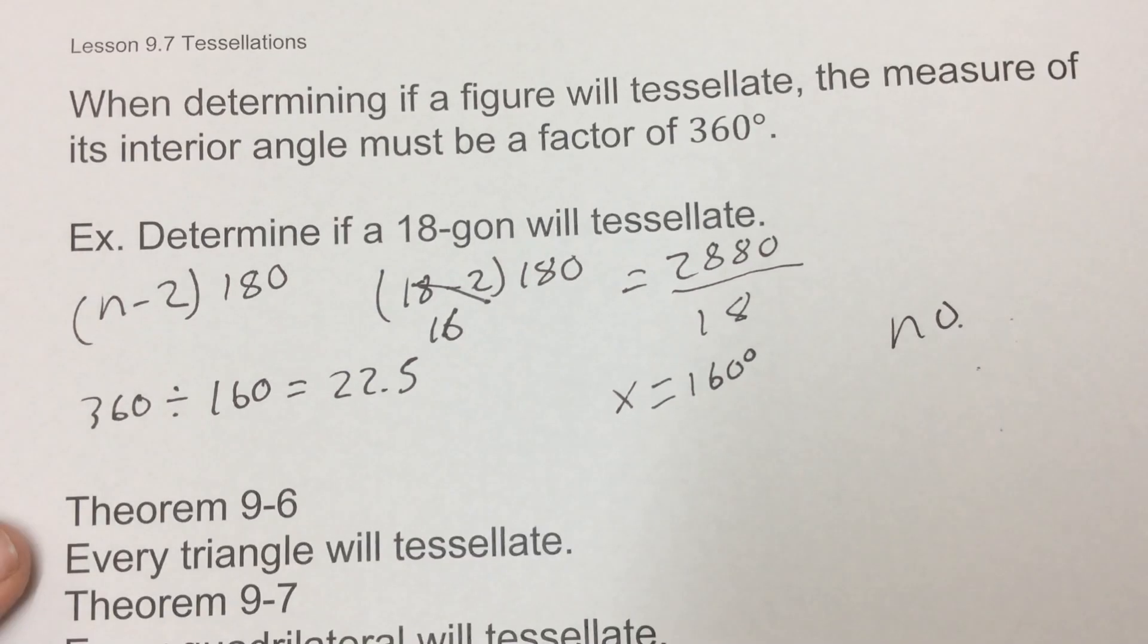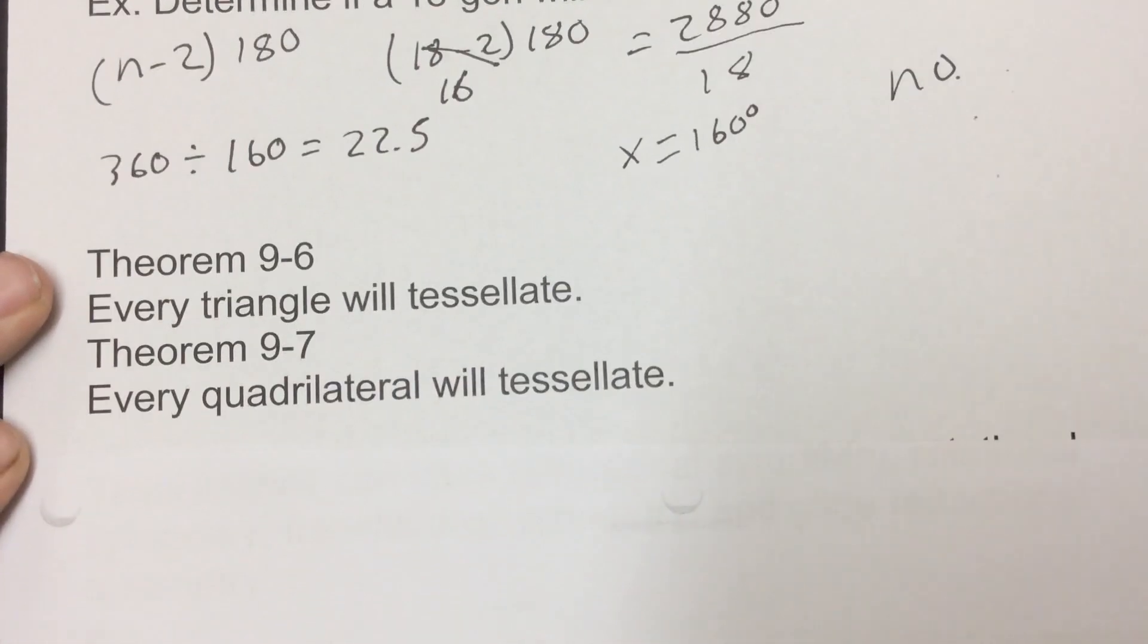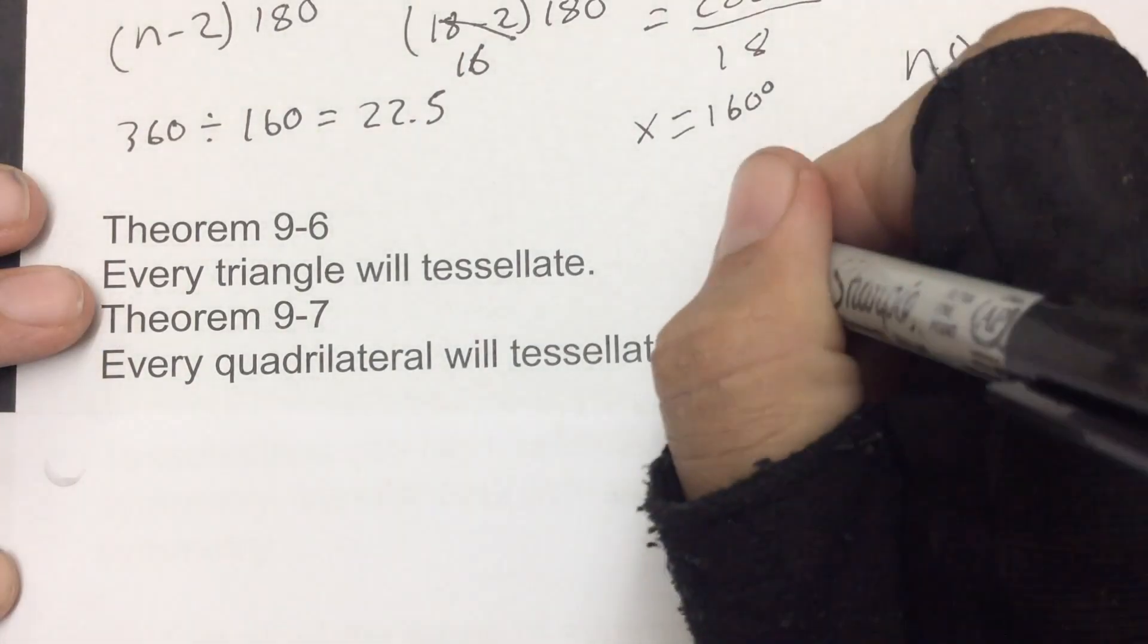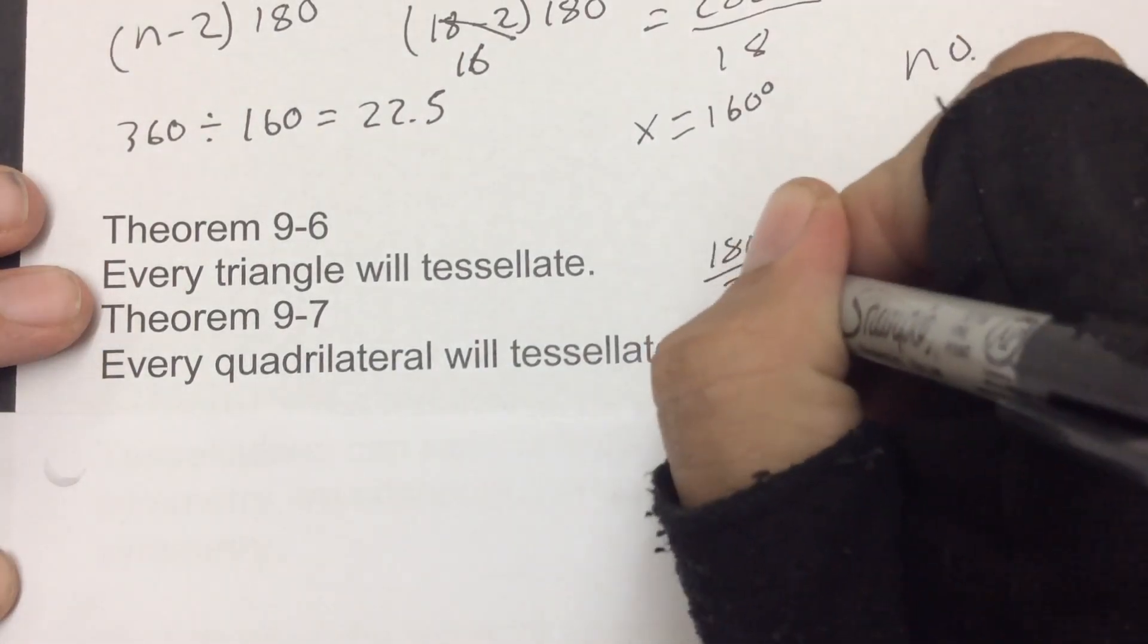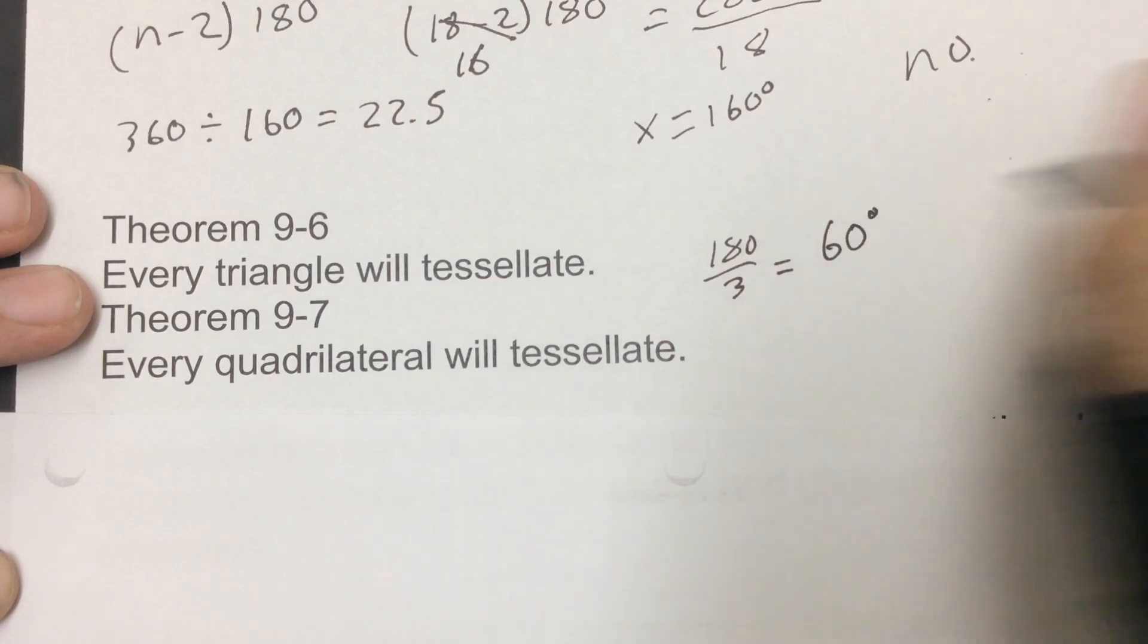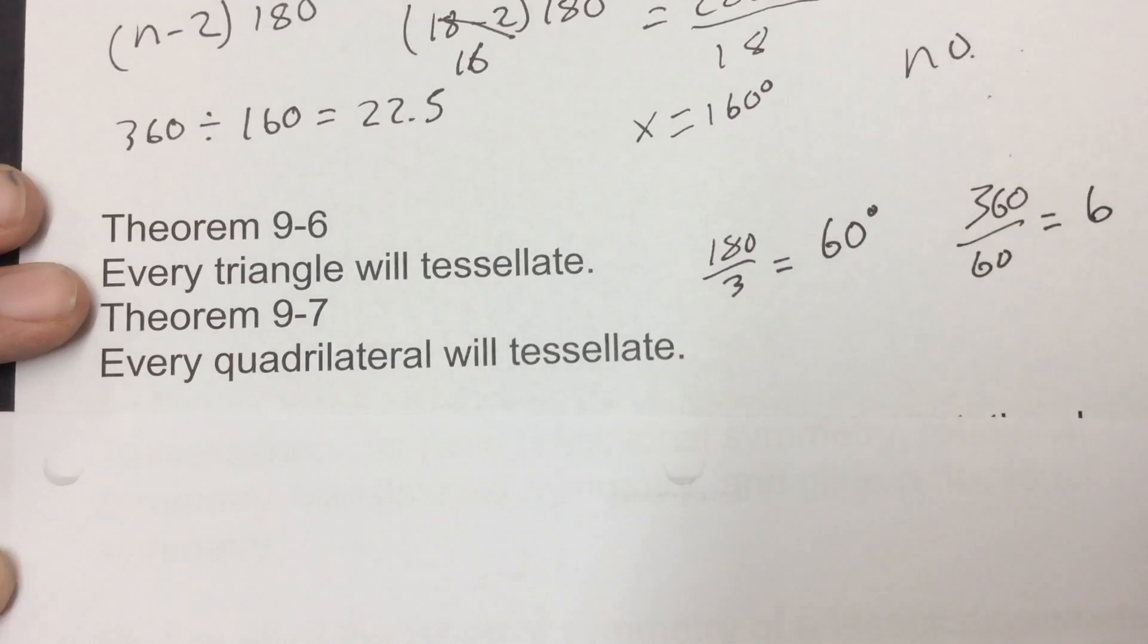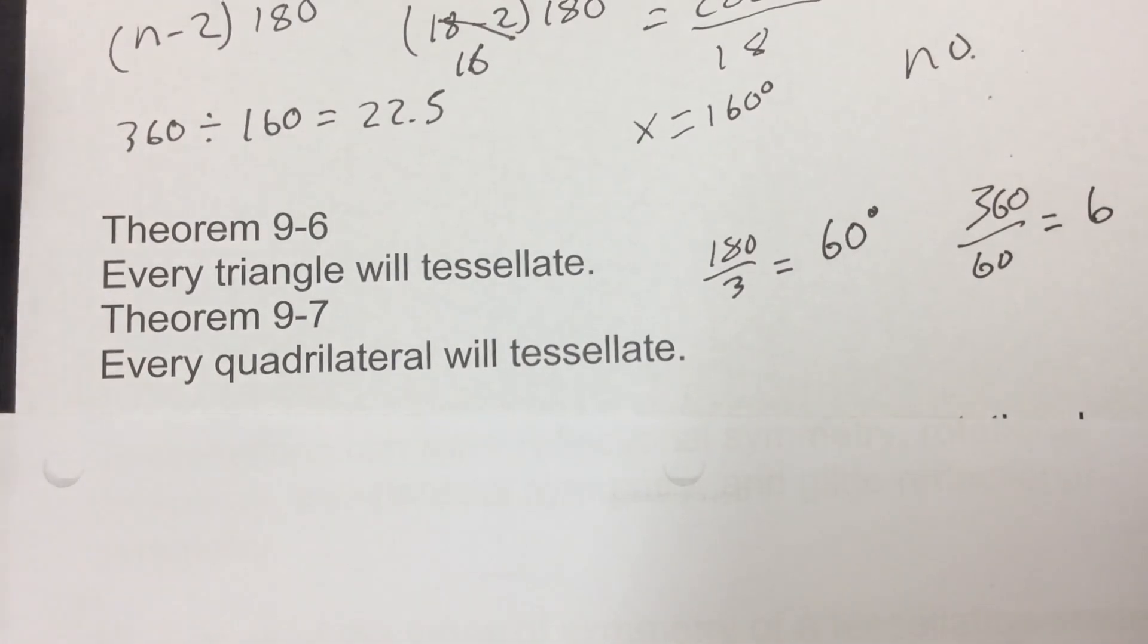Well, what are two things that will work? Every single triangle will be a factor of 360. Every sort of angle, we can make that work and it would tessellate. Same thing with quadrilaterals. Those would also tessellate. Because if you think about a triangle, triangle we know is 180 degrees for those inside. Well, 180 divided by the three corners leaves us with 60 degrees. Well, 360 divided by 60 would be six times. So we get a whole number. So that's why it tessellates.